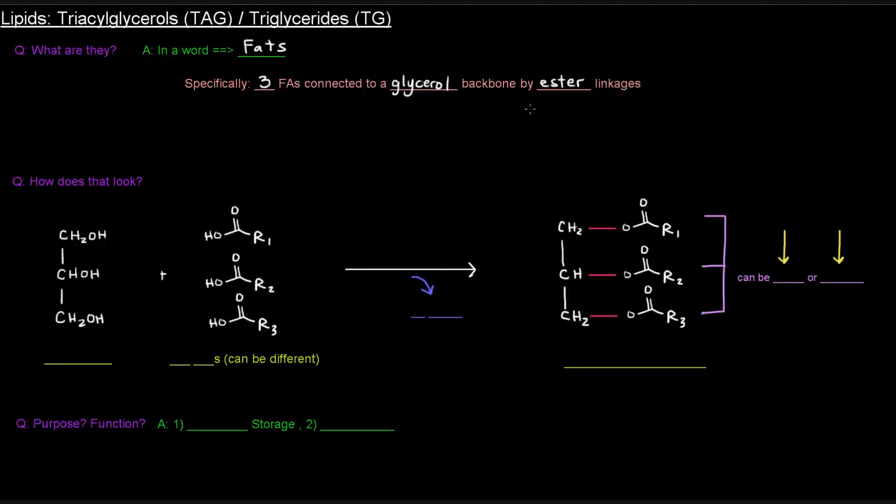So, how does that look? Well, here I've drawn this three-carbon molecule, and this molecule is glycerol. This three-carbon molecule, got one, two, three carbons. That is glycerol. So, glycerol will function as the backbone for this overall structure that we're going to draw.